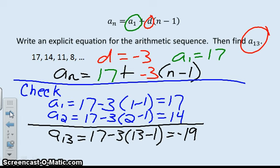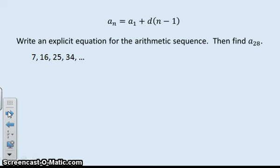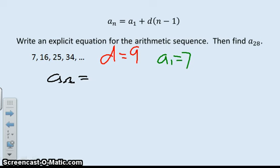Next problem. And Neil, take off that hat. Are you standing for me, please? Alright. So what's the common difference? Or is this arithmetic? Yes. What's the common difference? Nine. Nine. What's a sub one? Seven. Alright. So my explicit equation is a sub n equals seven plus nine times n minus one.